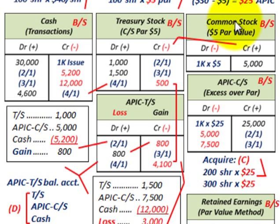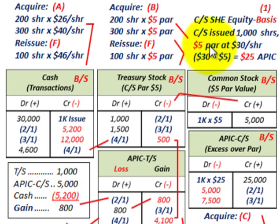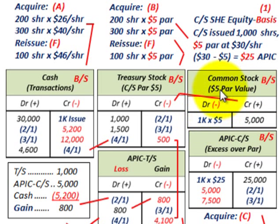Let's look at the common stock as our basis — our shareholders' equity basis. Say our common stock: we issued 1,000 shares at a $5 par value, and the issue price we received was $30 per share. Our par amount of $5 per share times 1,000 shares — we'd credit that for $5,000.